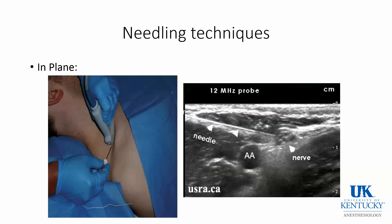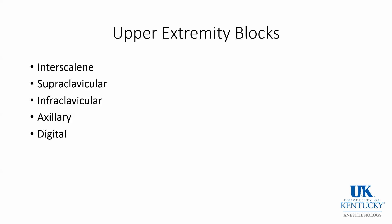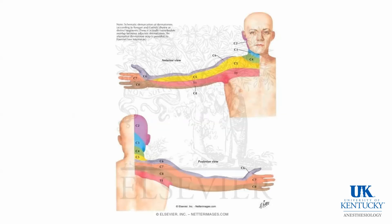The upper extremity blocks we will discuss today are those most amenable to blockade with ultrasound, and include the interscalene, supraclavicular, infraclavicular, axillary, and digital approach to blockade of the brachial plexus. The dermatomal distribution of the upper extremity consists of innervation from cervical spinal roots for the most part, with some contribution from thoracic roots as well.